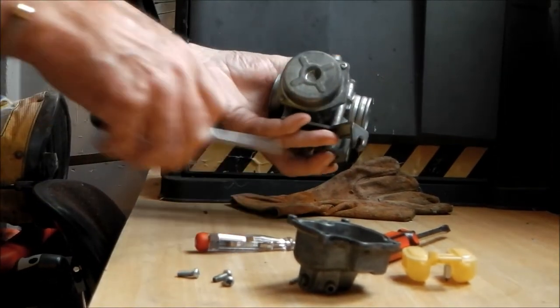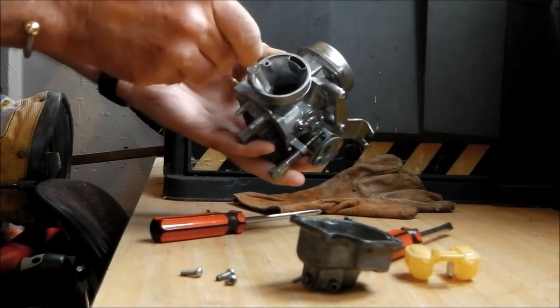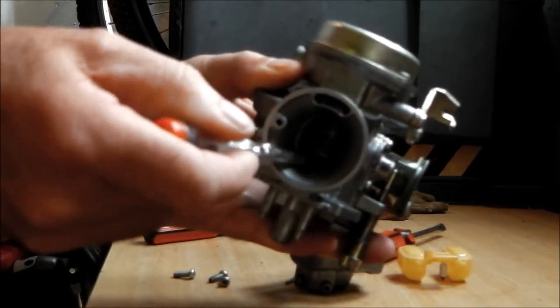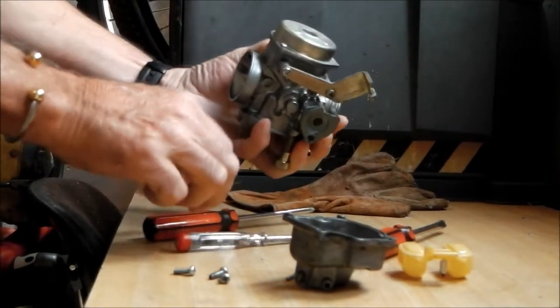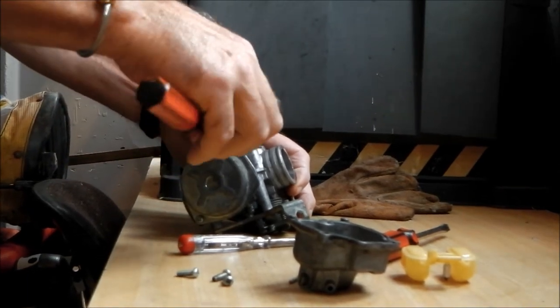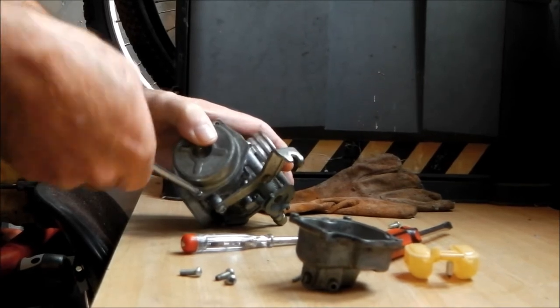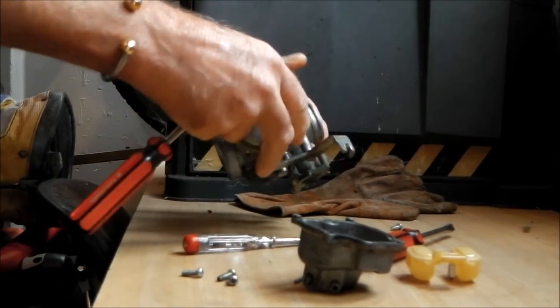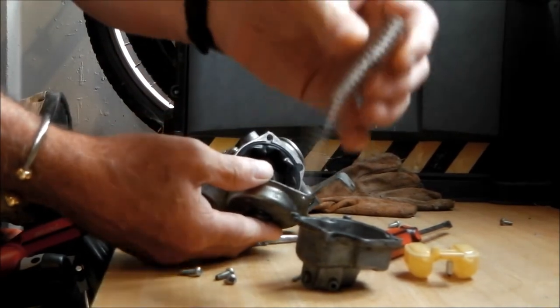Then we're going to take the top off, which is the pneumatic part which operates the slider in there. Can you see that? There's the slider. There's a diaphragm in the top which operates that pneumatically with air if you like. It's held on with two screws. That comes off. Big long spring. Don't lose your spring.